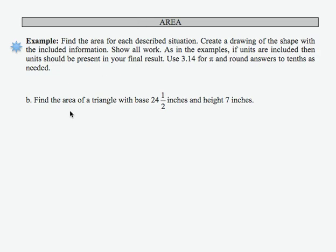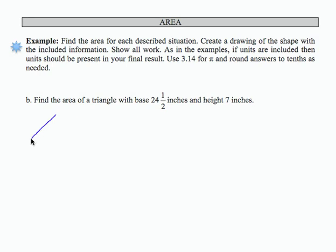So let's take a look at a triangle that would represent this situation. My base is 24 1/2 inches and my height is 7. So I'm going to draw a dotted line there and that's going to be my height, which is 7 inches and my base is 24 1/2 inches.